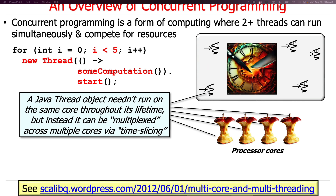A Java thread doesn't have to run on the same core throughout its lifecycle. It can be multiplexed or time-sliced across different processors. For example, a thread might start on the first core, then suspend and later resume on the second, third, or fourth core. This is typically called multiplexing and time-slicing — visualized here as a clock with knives slicing it up.